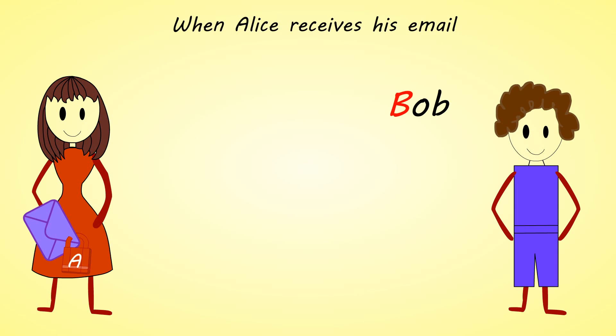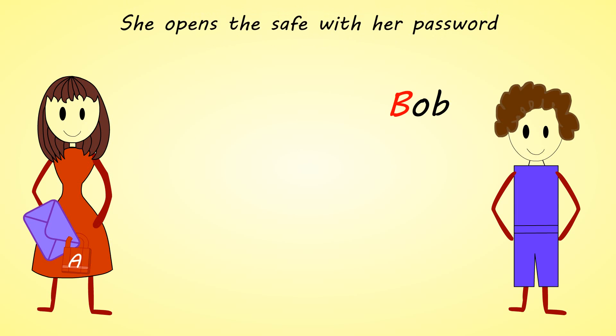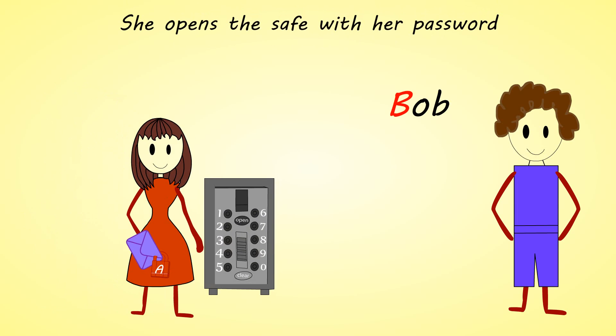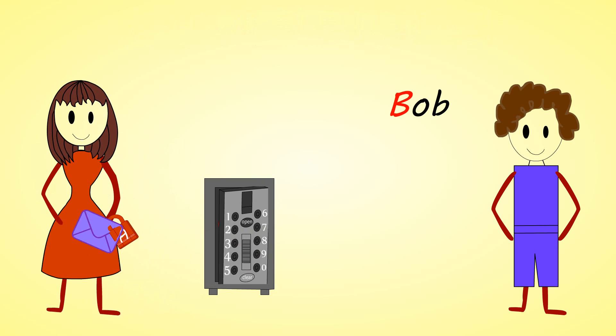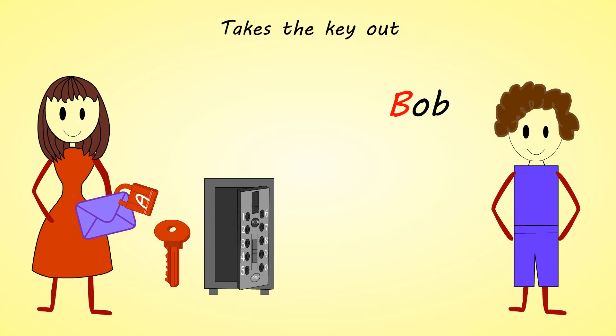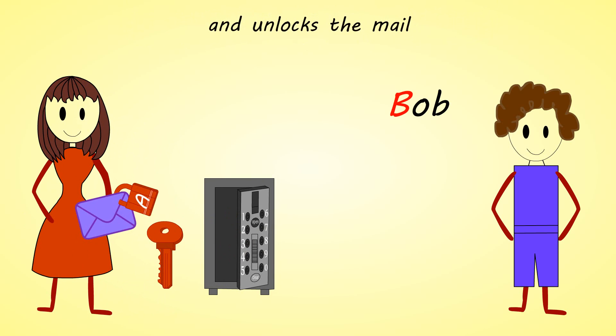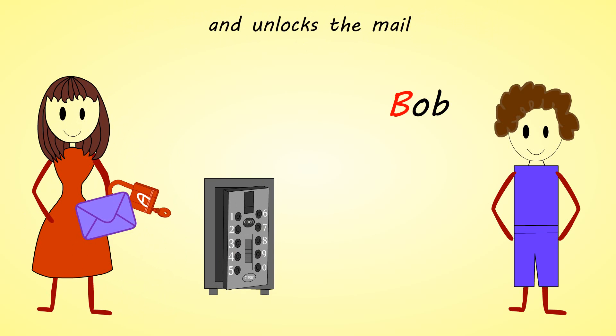When Alice receives his mail, she opens the safe with her password, takes the key out, and unlocks the mail.